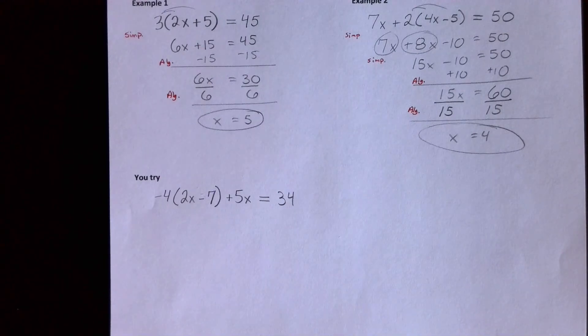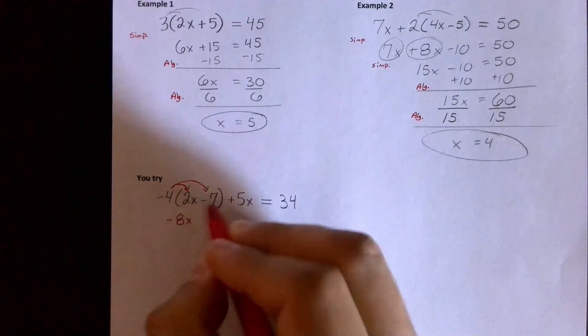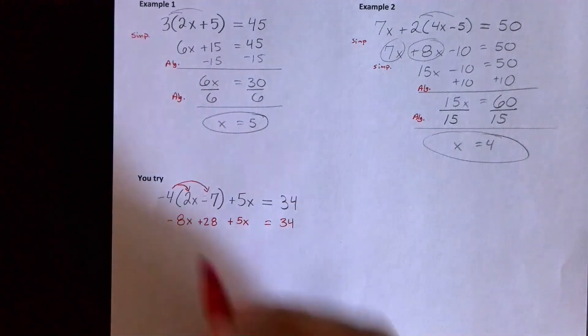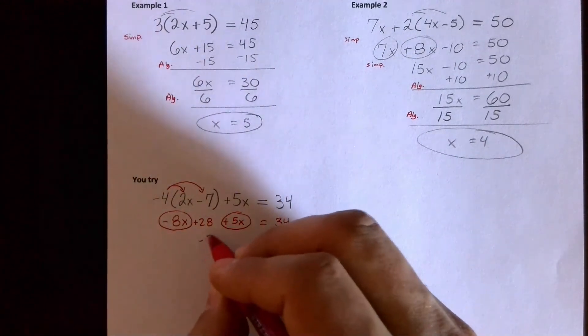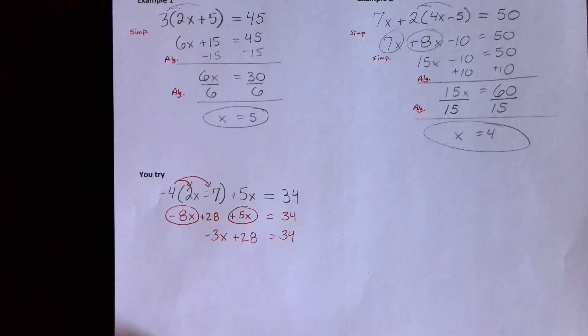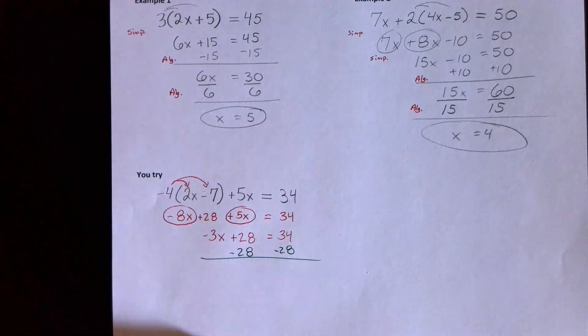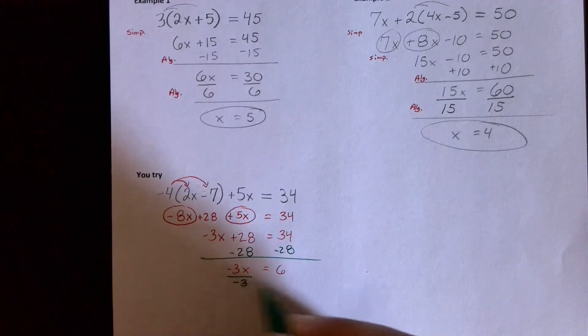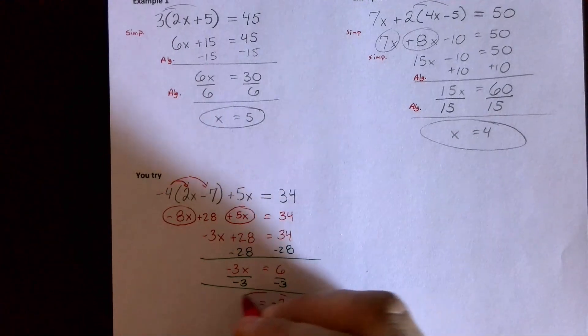All right, hopefully you paused it and tried it. So this one I would distribute first the negative 4. Negative 4 times 2x is negative 8x, negative 4 times negative 7 is positive 28. Bring down the plus 5x and bring down the equals 34. Now I'll combine like terms, another simplifying step. I haven't done any algebra yet, just combine like terms, making my problem simpler, working smarter not harder. After combining those like terms I got a nice easy two-step algebra problem to do now. Now I'll do an algebra step, first algebra step in green, taking away 28 both sides, leaves me with negative 3x equals 6. Second algebra step, opposite of multiplying by negative 3 is dividing by negative 3, so that's my second algebra step. Now x is equal to negative 2.